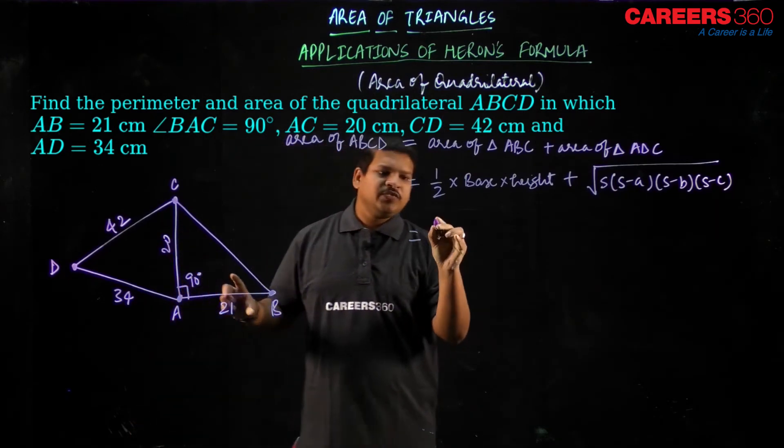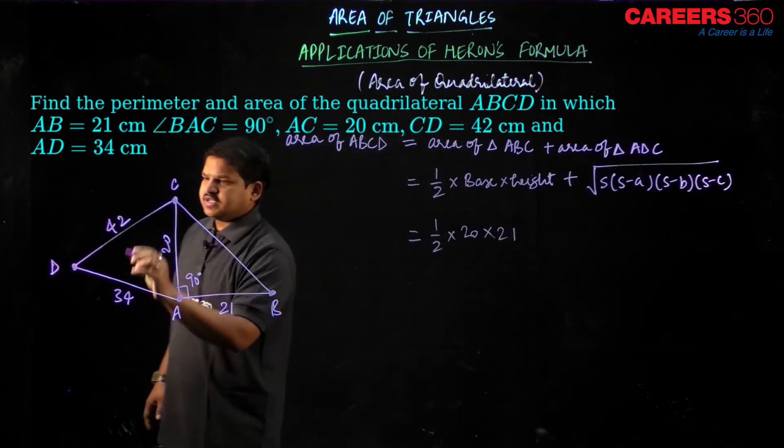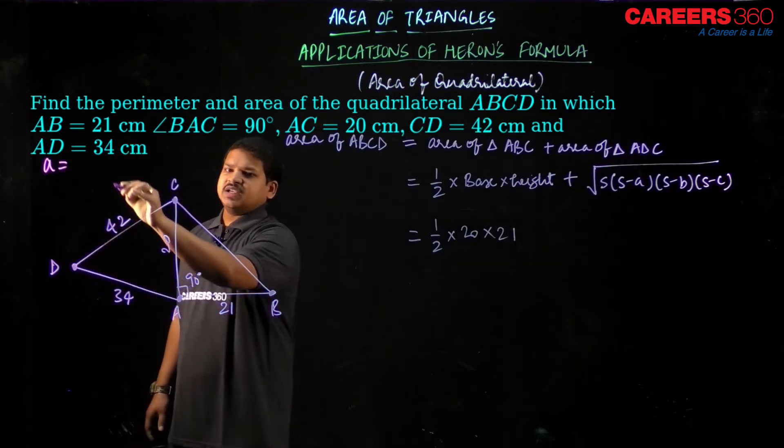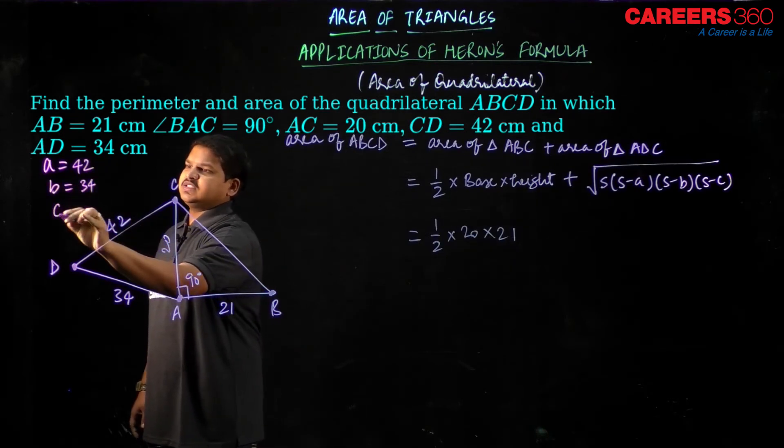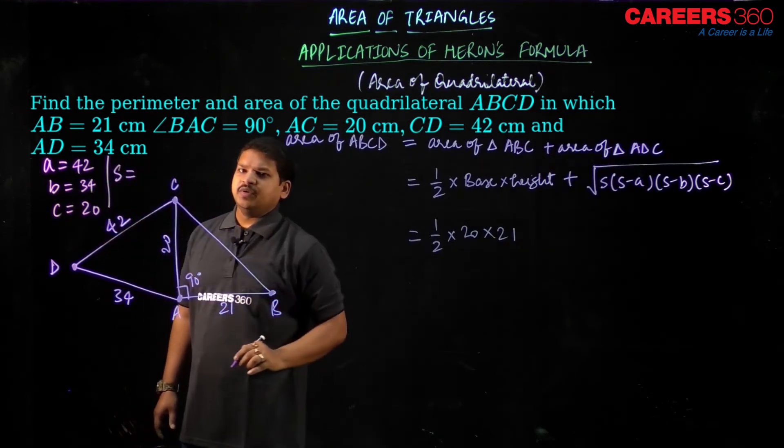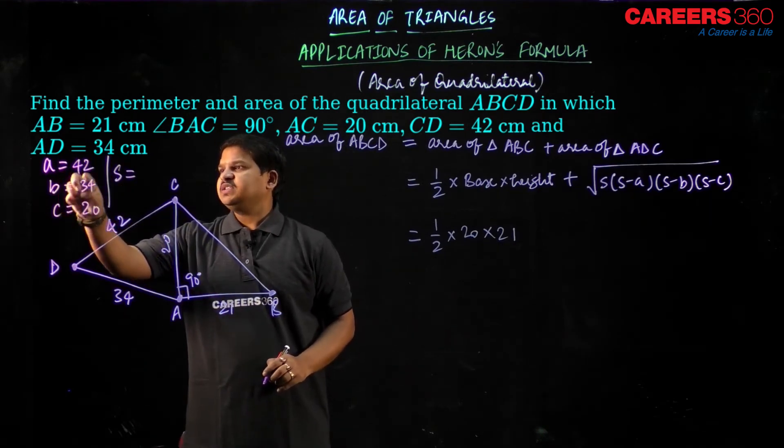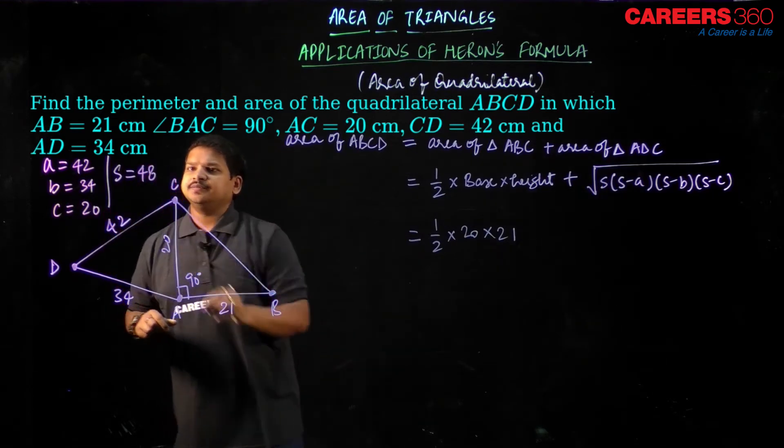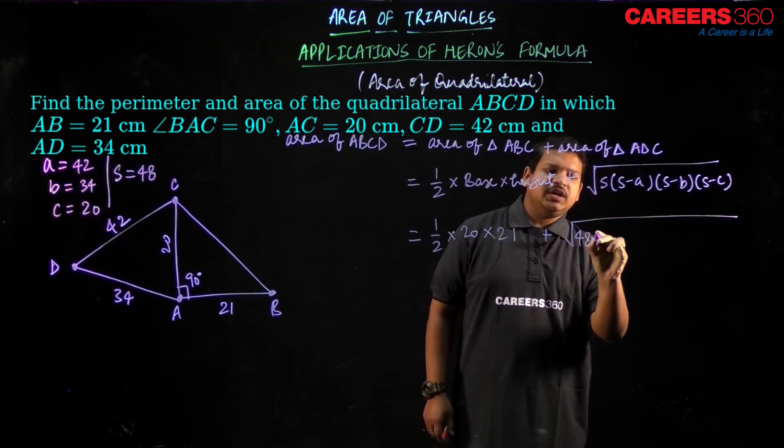Now half into base into height will be what? Half into 20 into 21 and I have as you can see over here my A is what? Let us assume A as 42, B as 34 and C as 20. If these three are given then S would be what? The summation of all three would be 76 and 20, 96.